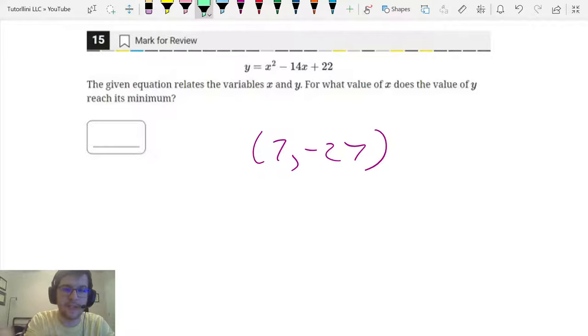So seven comma negative 27. And notice how it's asking for what value of x does it reach its minimum? So we want to go with seven. So the final answer for this one is seven. Remember, if it asks you what's the minimum or maximum and it doesn't mention x at all, you want the y value.